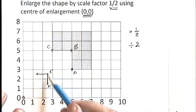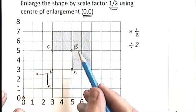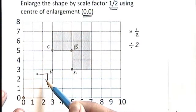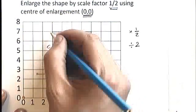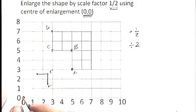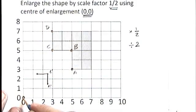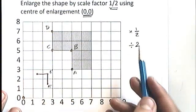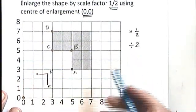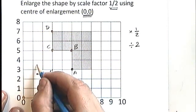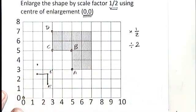And that sort of L shape there is the same as this L shape here. It's just been reduced in size. Let's carry on. Let's try this one here, which is point D. To get from my center of enlargement to D, I have to go three along and seven up. If I half those numbers, divide them by two, I get one point five along and three point five up, which is there.